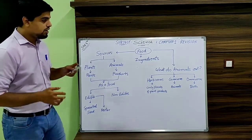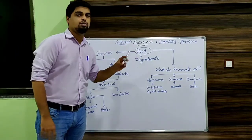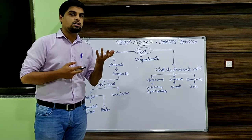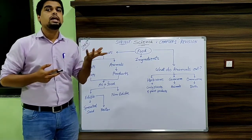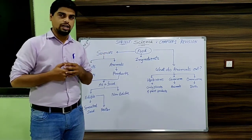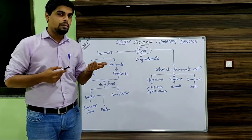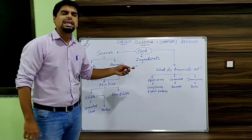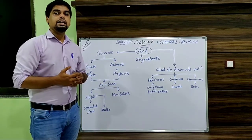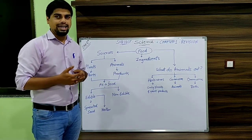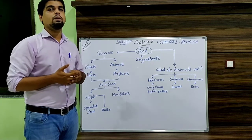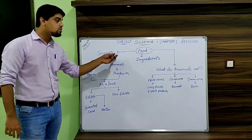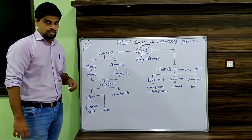In chapter number 1 we started with the concept of food. What is food? It is a material or substance which helps in the growth of living organisms. That living organism can be human beings, can be plants, can be animals. After that we have ingredients. Ingredients is any substance or material which helps to prepare any food items or dish.